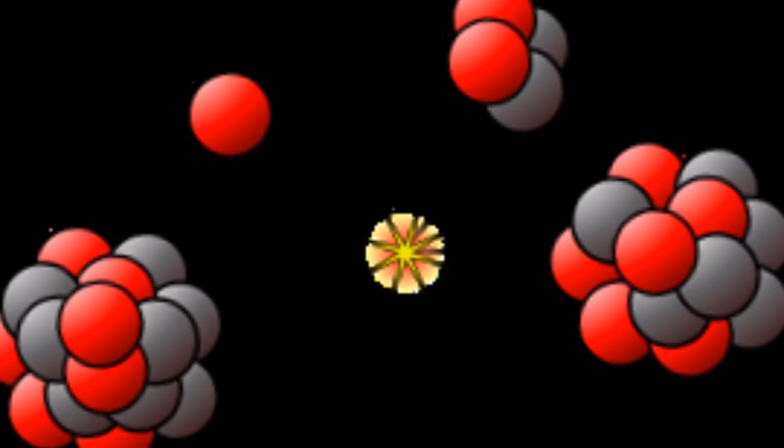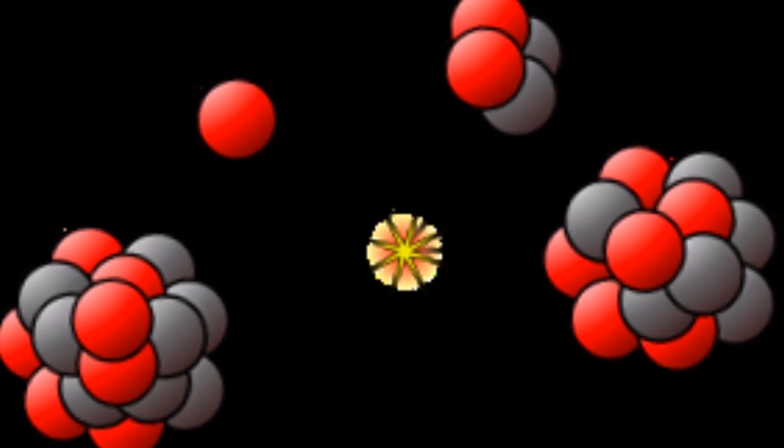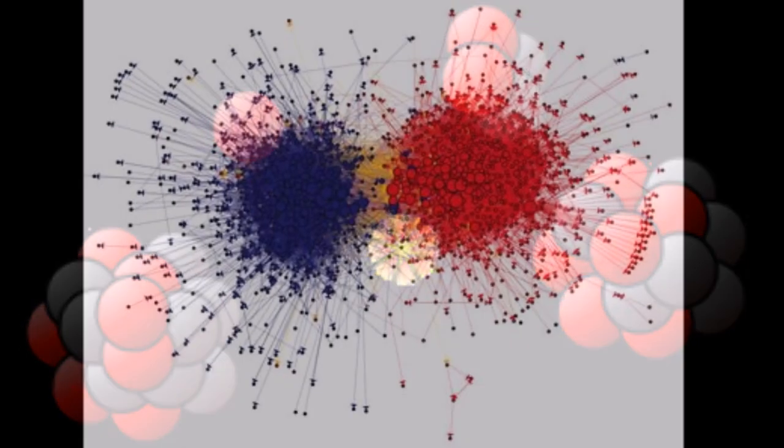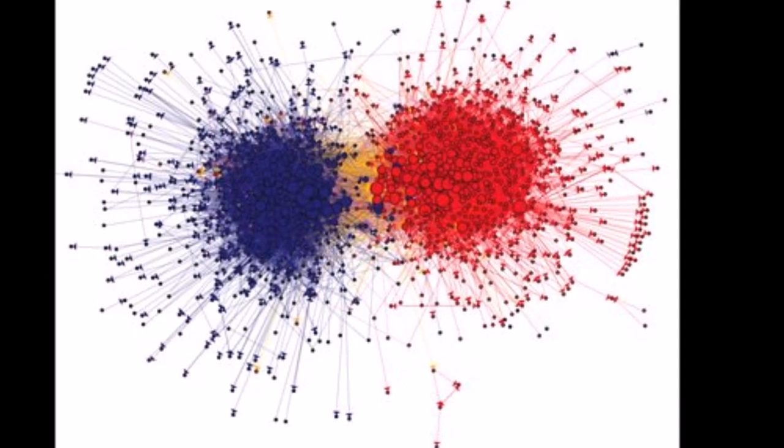You see, atoms are held together by various types of bonds to form molecules. When molecules receive enough energy, the bonds snap, and the atoms are sent flying away from each other.